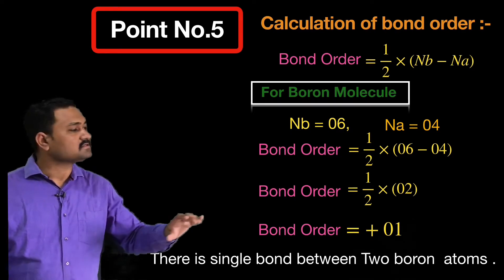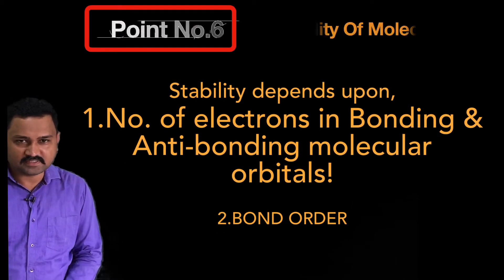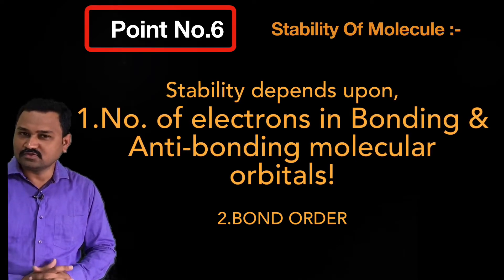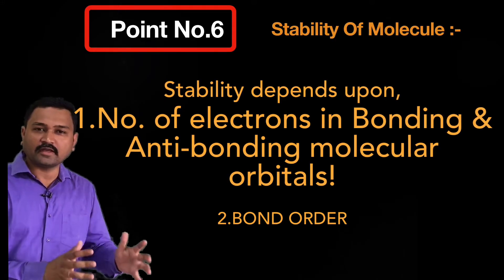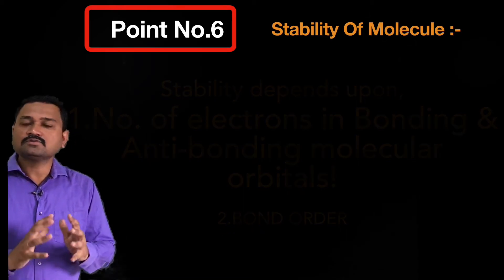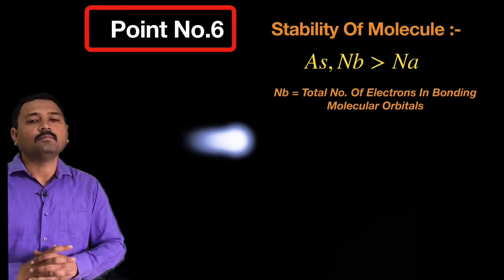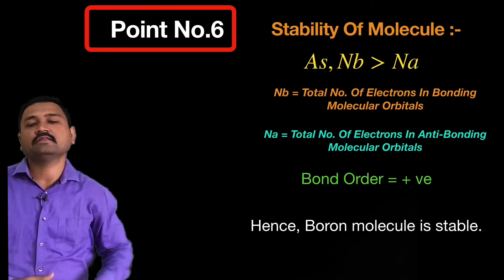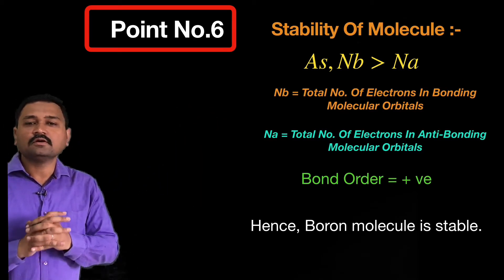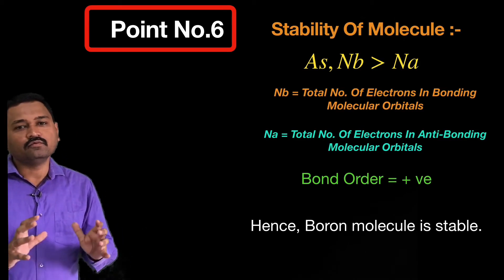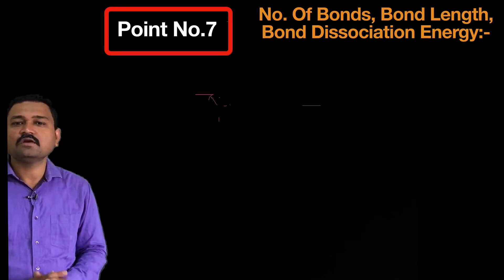Point number six: the stability of the molecule. Stability depends on two factors: the total number of bonding vs. anti-bonding electrons, and the bond order. For the boron molecule, the number of bonding electrons is greater than the number of anti-bonding electrons (Nb > Na), and the bond order has a positive value. Hence, the diboron molecule is a stable molecule.